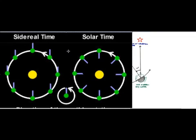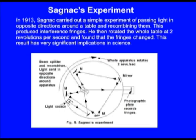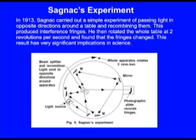In 1913, Sagnac carried out a simple experiment of passing light in opposite directions around a table and recombining them. And they go round the circuit and are recombined at this splitter and recombining prism.